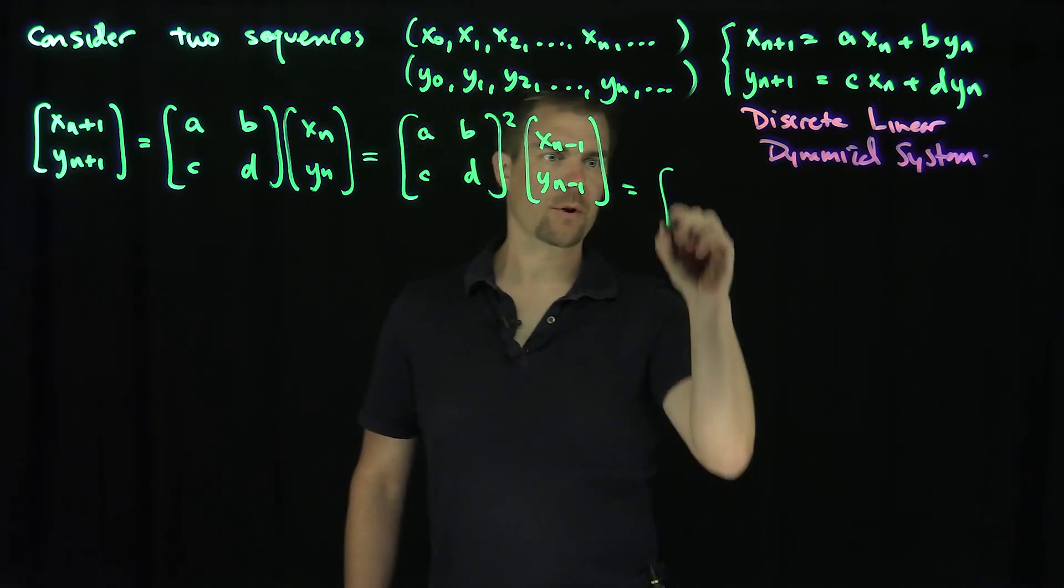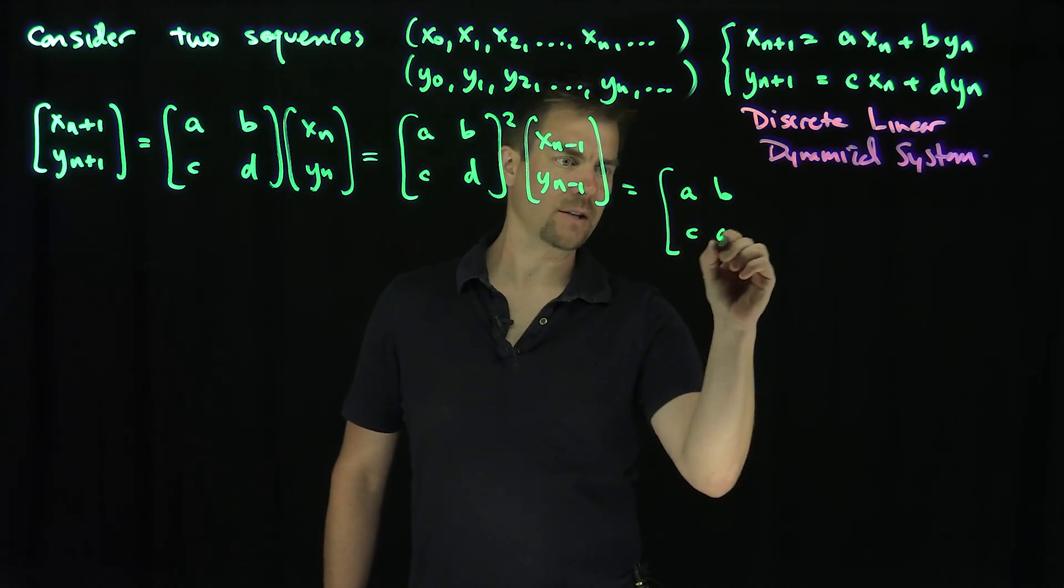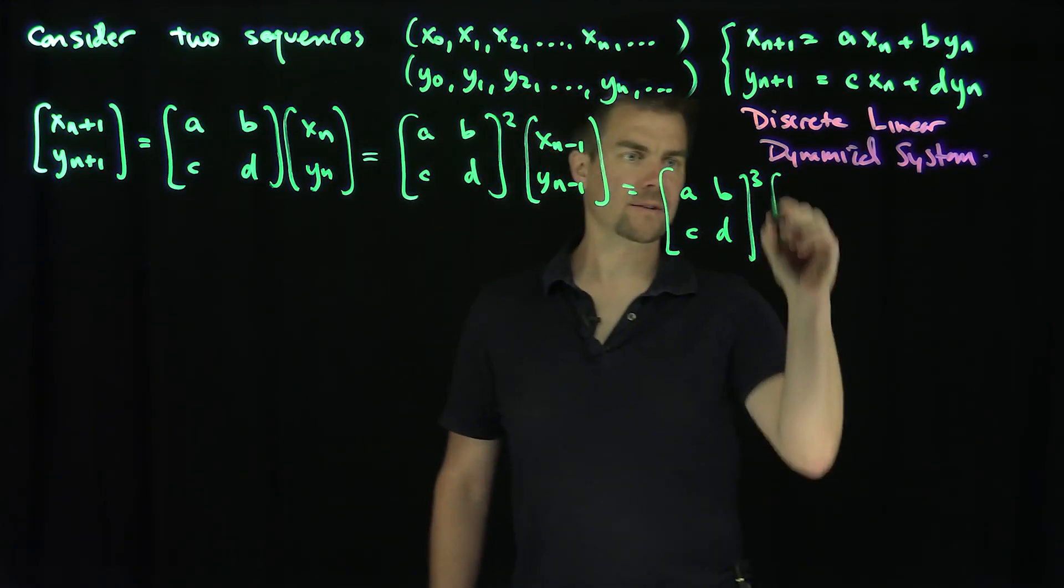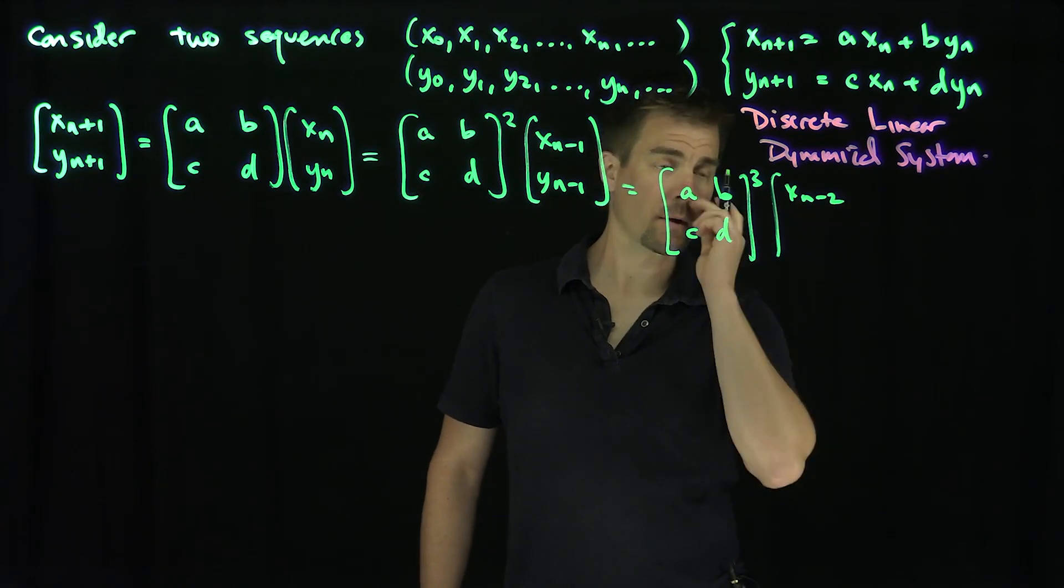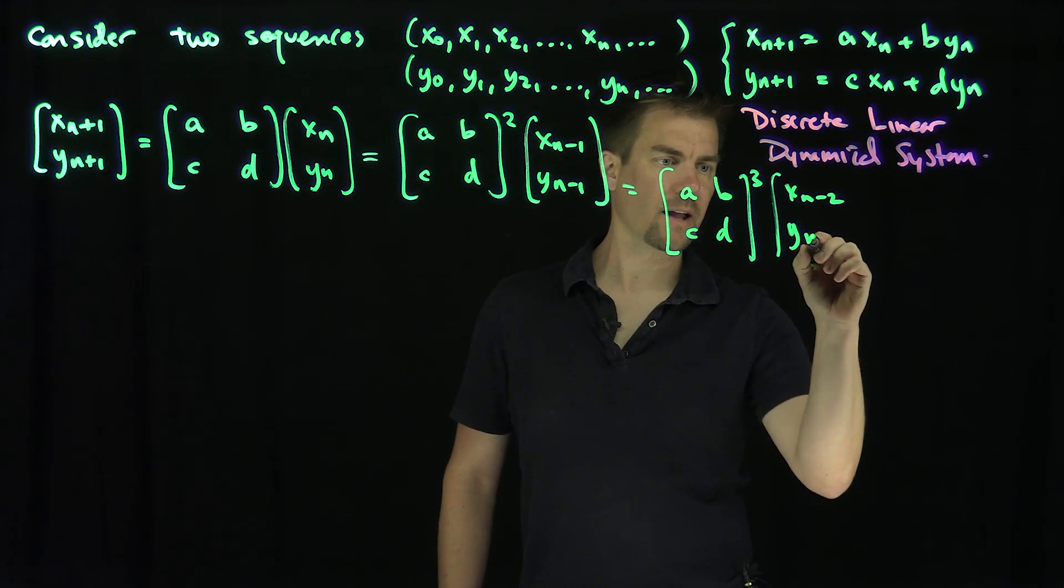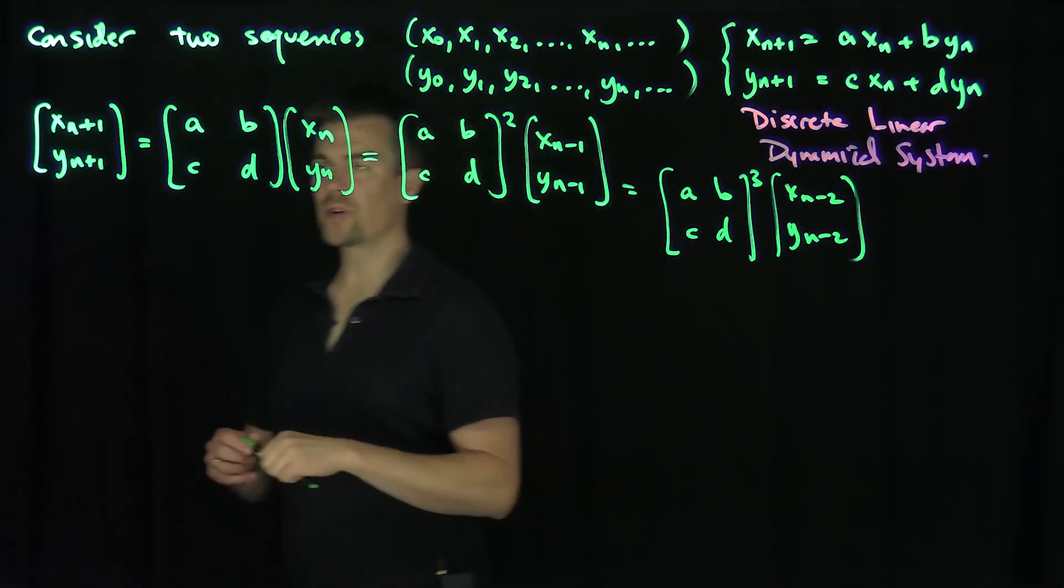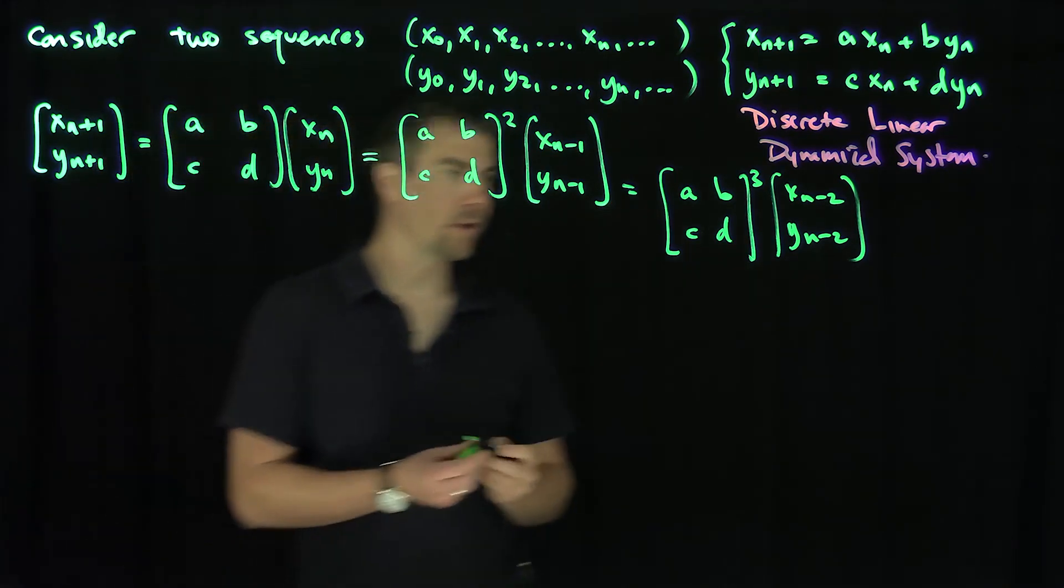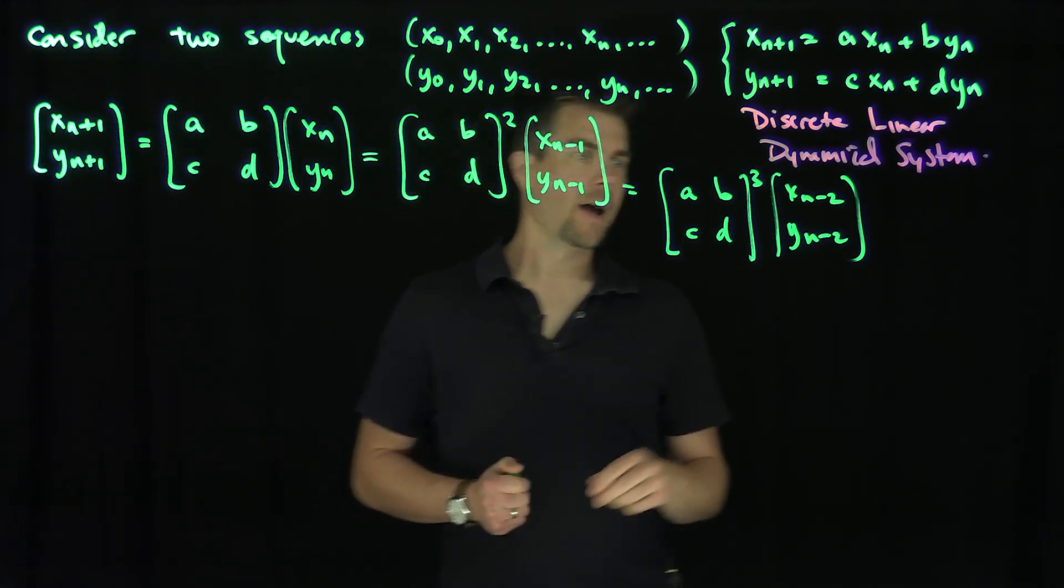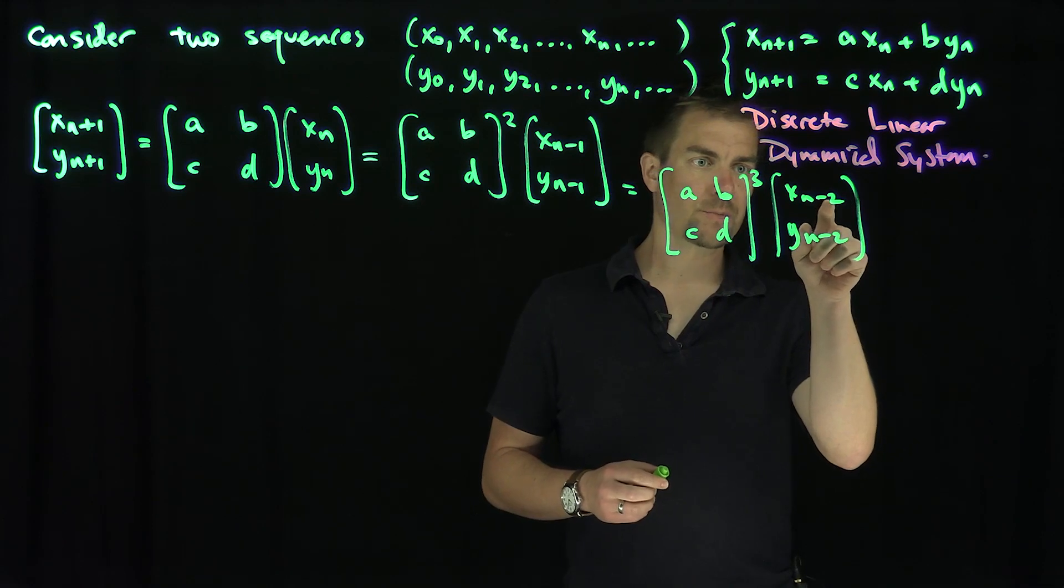Go down one more step, you can have A, B, C, D cubed, and then we'll have x n minus 2 and y n minus 2. And then we see in general that if I keep iterating this over and over again, if I go down all the way to zero, that's going to correspond to a k.